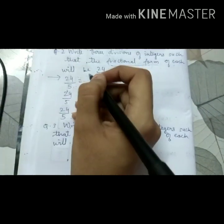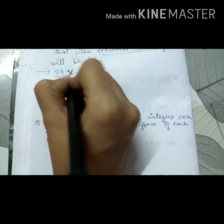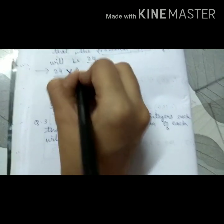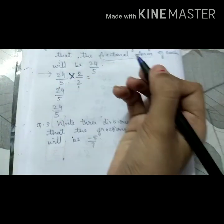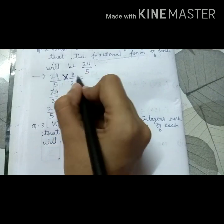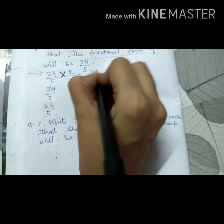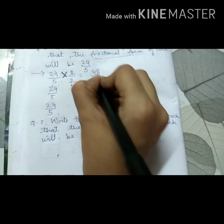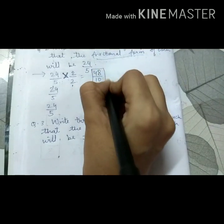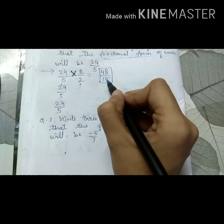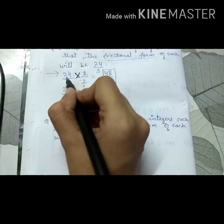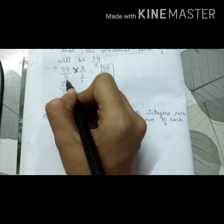Now, if we multiply 24 upon 5 with same number, suppose I am multiplying by 2, 2 in numerator, 2 in denominator. So what I will be getting? 24 twos are 48, 5 twos are 10. This is our first integer. So when we divide 48 upon 10, our answer will be 24 upon 5.